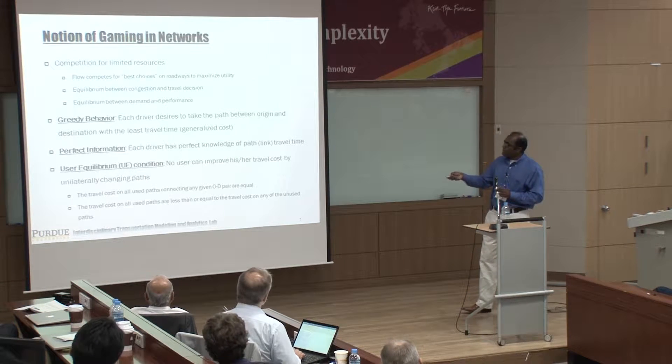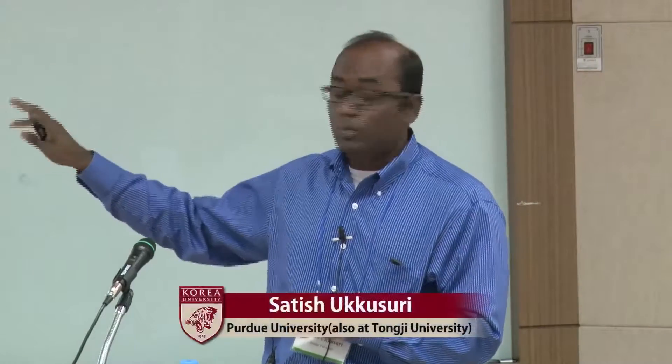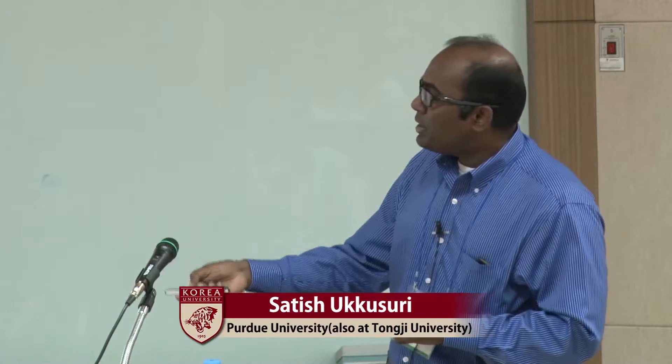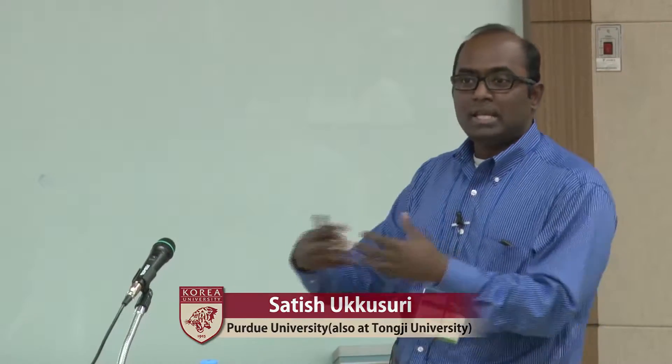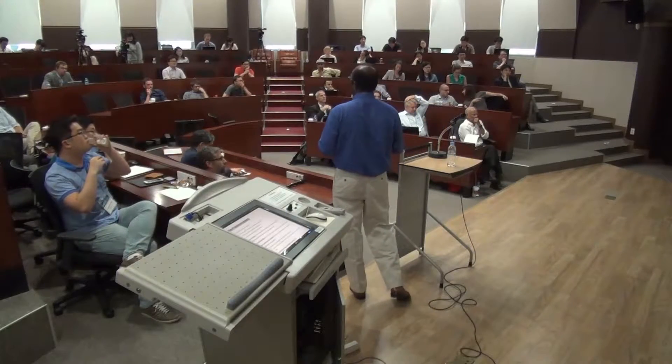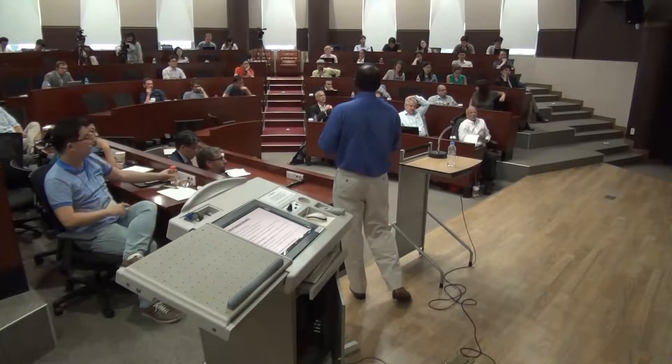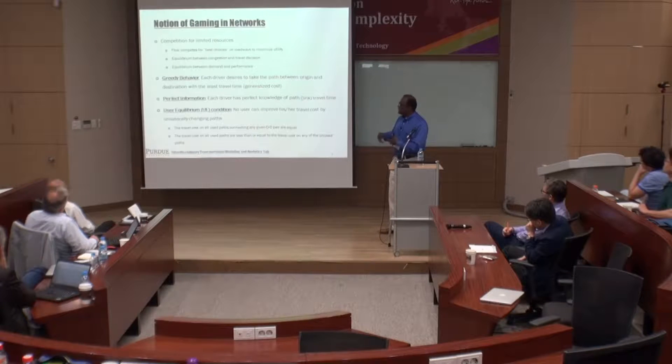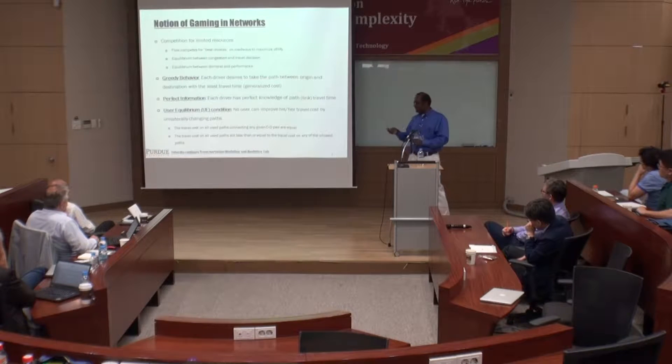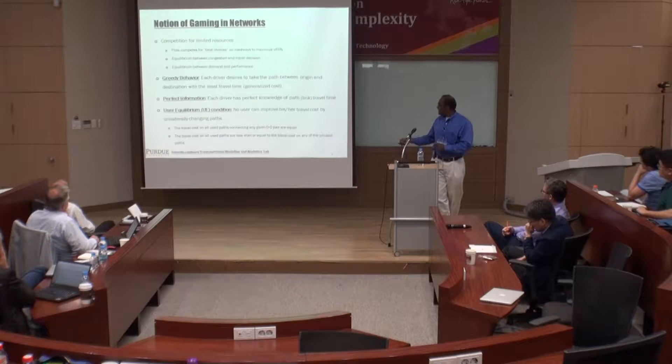Under perfect information and user equilibrium, the resulting network state is one where there is no incentive for any user to deviate onto any other path. The users are making path choices: the path they choose, given all other users' choices, is the best path under the given set of conditions. That is the definition of user equilibrium.